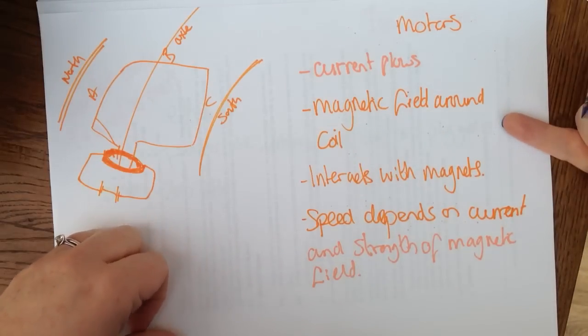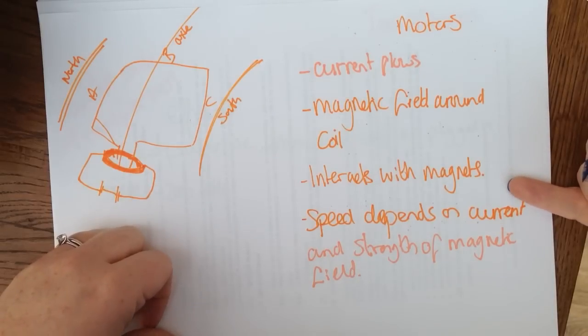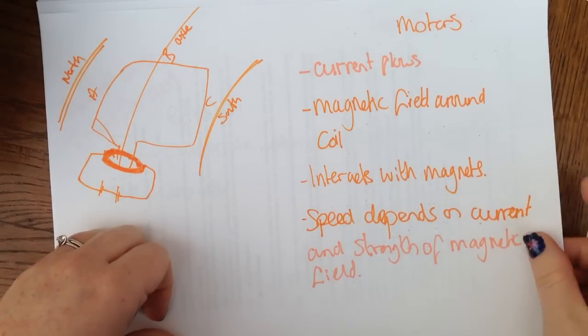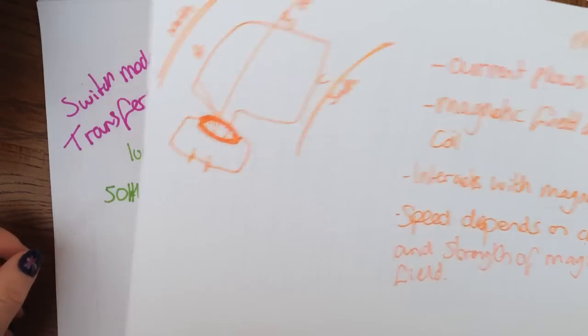So the current flows, the magnetic field is created around the coil, this interacts with the magnet, and the speed depends on the current and strength of the magnetic field.